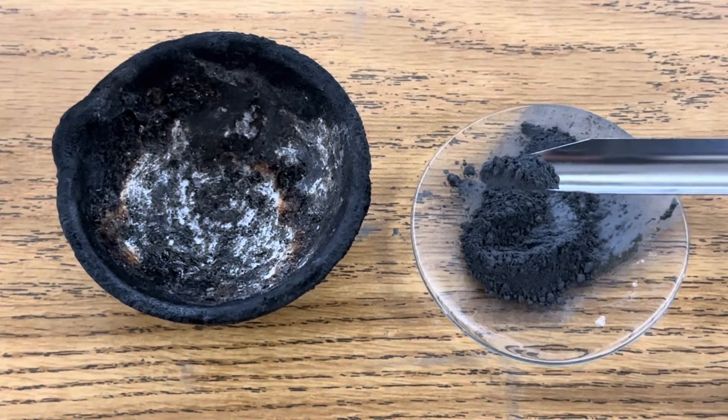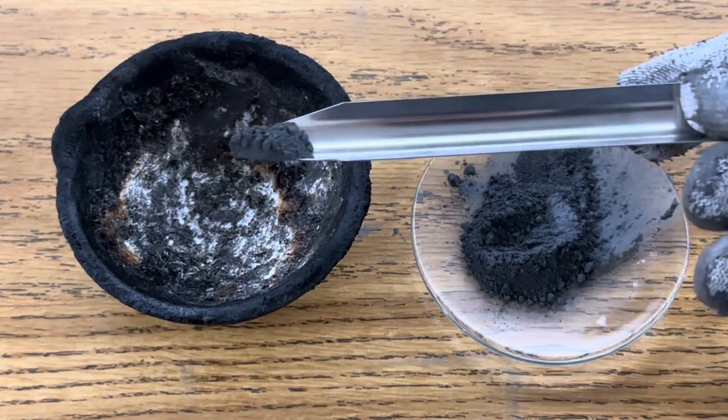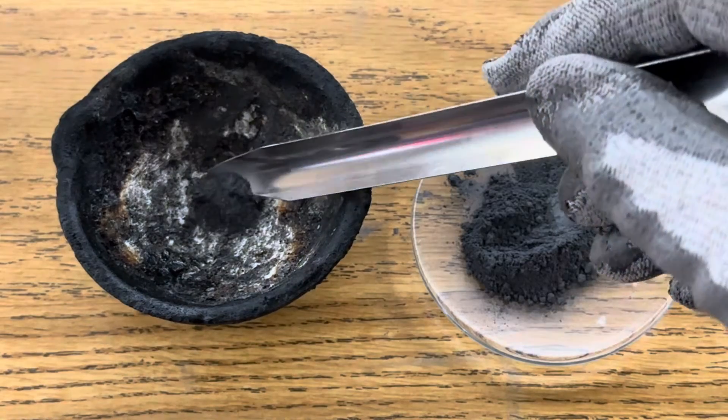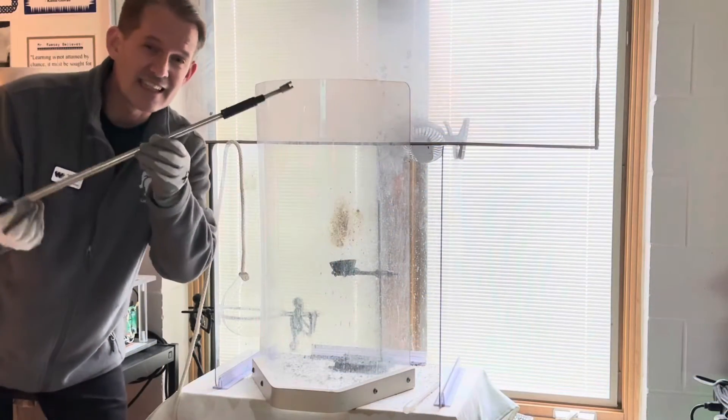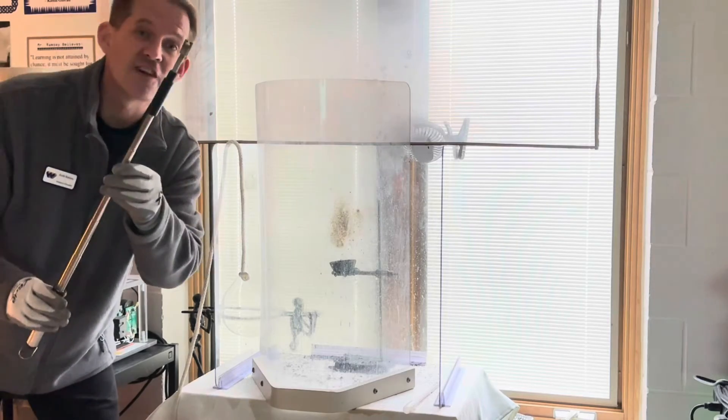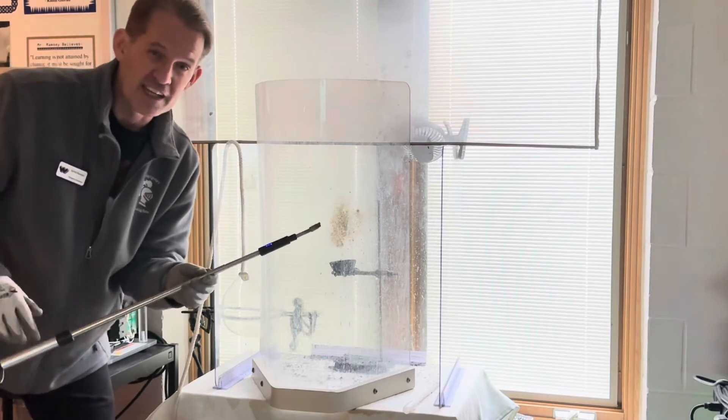Next we're going to deflagrate half a gram in our crucible and we'll put this on our blast shield for safety. Here's our blast shield. I'm using an extendable plasma wand just for deflagration. Let's check it out.